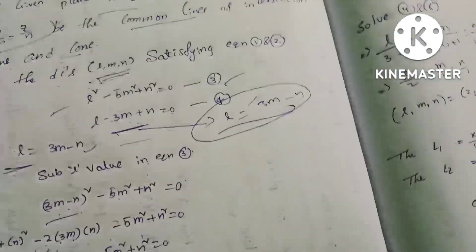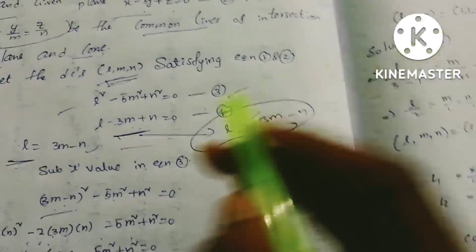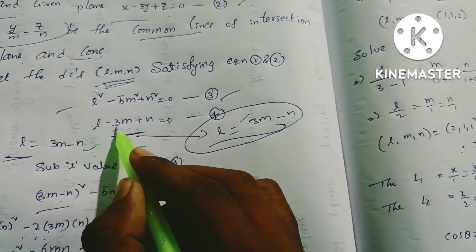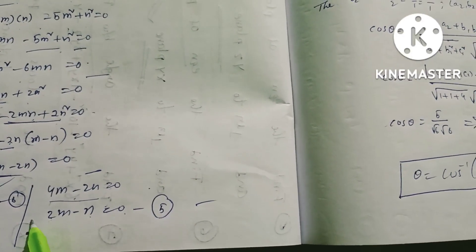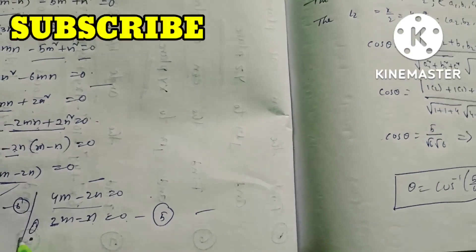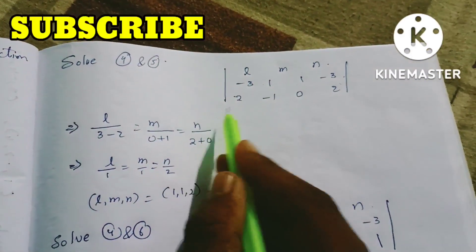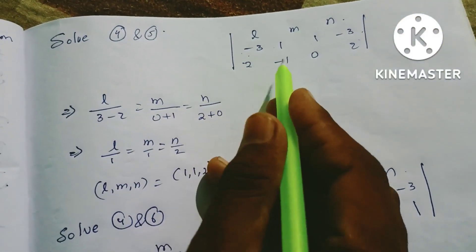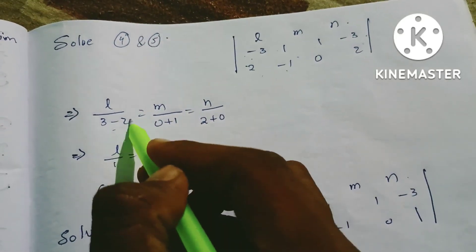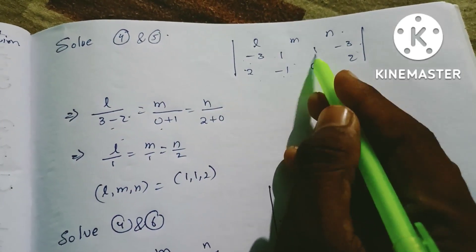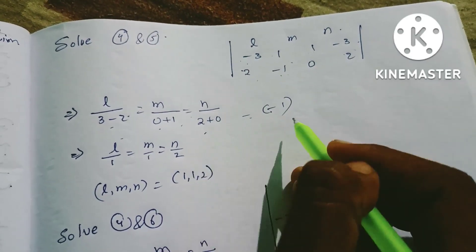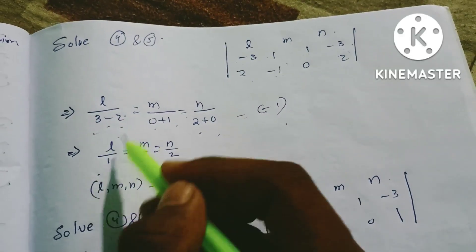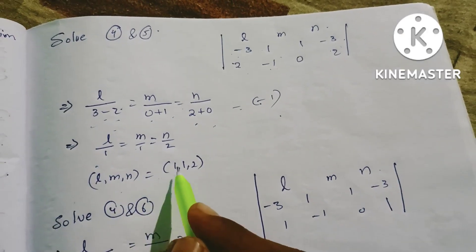Solving equations 4 and 5 simultaneously: from the matrix with coefficients [-3, 1, 1] and [1, -1, 0, 1], using cross-multiplication: L/(-1·1 - (-3)·1) = M/(1·0 - 0) = N/(1·1 - 0·(-3)). This gives L/2 = M/1 = N/2, so the direction ratios (L, M, N) = (1, 1, 2).